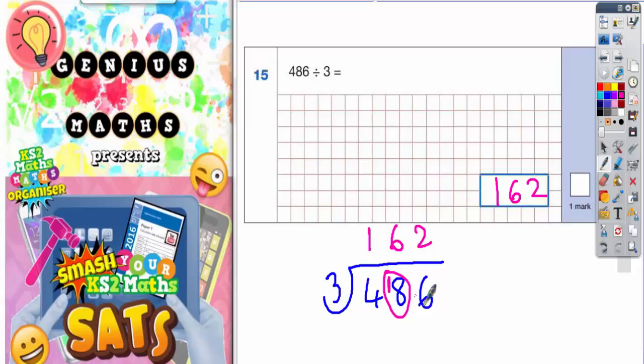Obviously you've got squares on the grid here and you could have written your bus shelter method there on the grid. It still would have worked out the same. It's just I have more space down here.